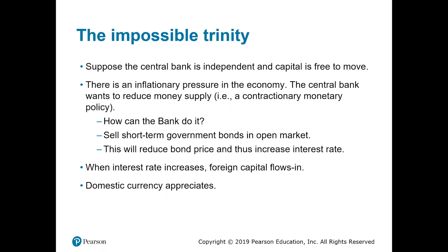Currently there is inflationary pressure in the economy. The central bank wants to reduce the money supply to reduce that inflationary pressure. To do this, it can sell short-term government bonds in the open market, like treasury bonds. When the central bank sells bonds, bond prices go down, because the increased supply creates downward pressure on the price.